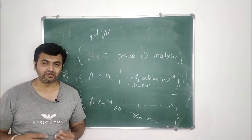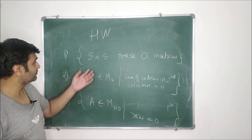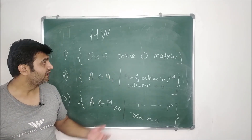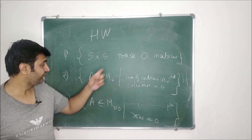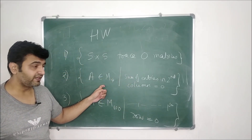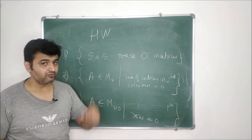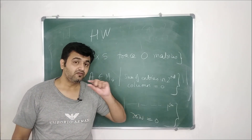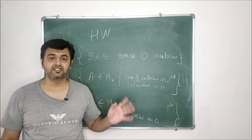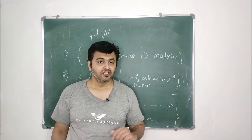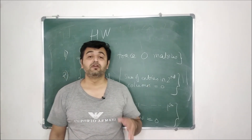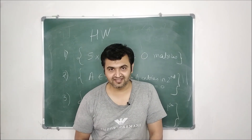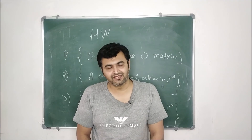Here are some homework problems you may see in exams. First: what is the dimension of all 5×5 matrices whose trace is zero? Second: all 4×4 matrices whose sum of entries in the second column is zero? Third: all 100×100 matrices whose sum of entries in the first row is zero? I hope you understood this lecture. If you have any doubt, ask in the comment section. If you liked this lecture, please like, share, and subscribe. Thank you.